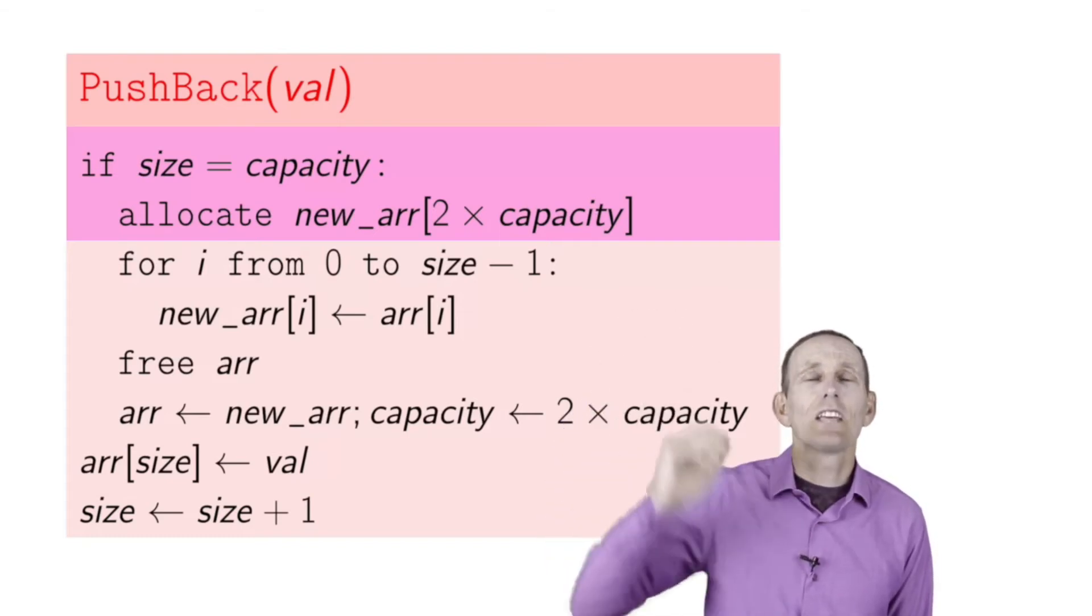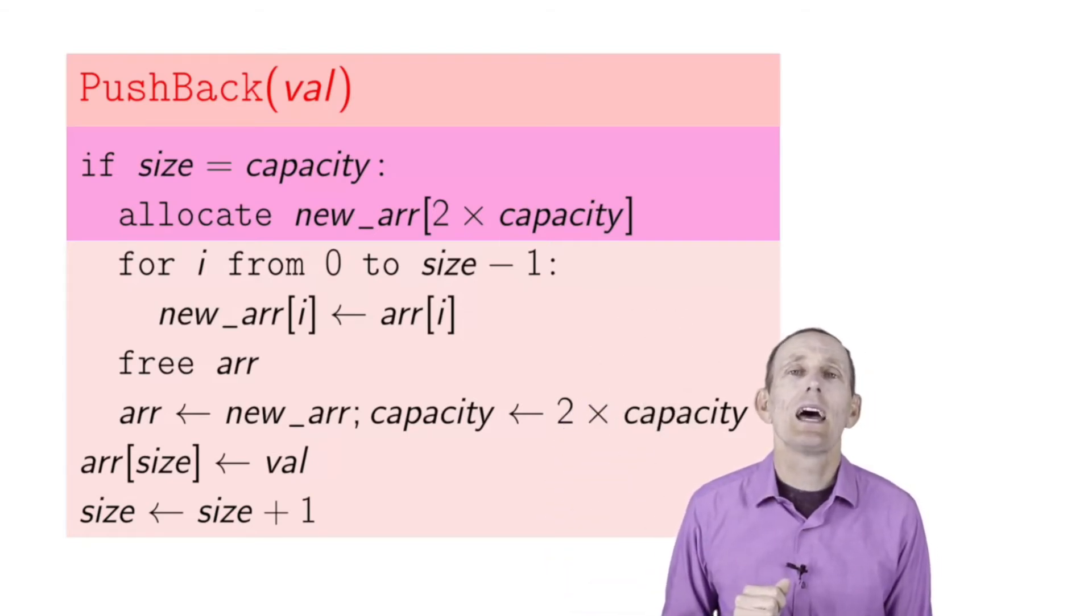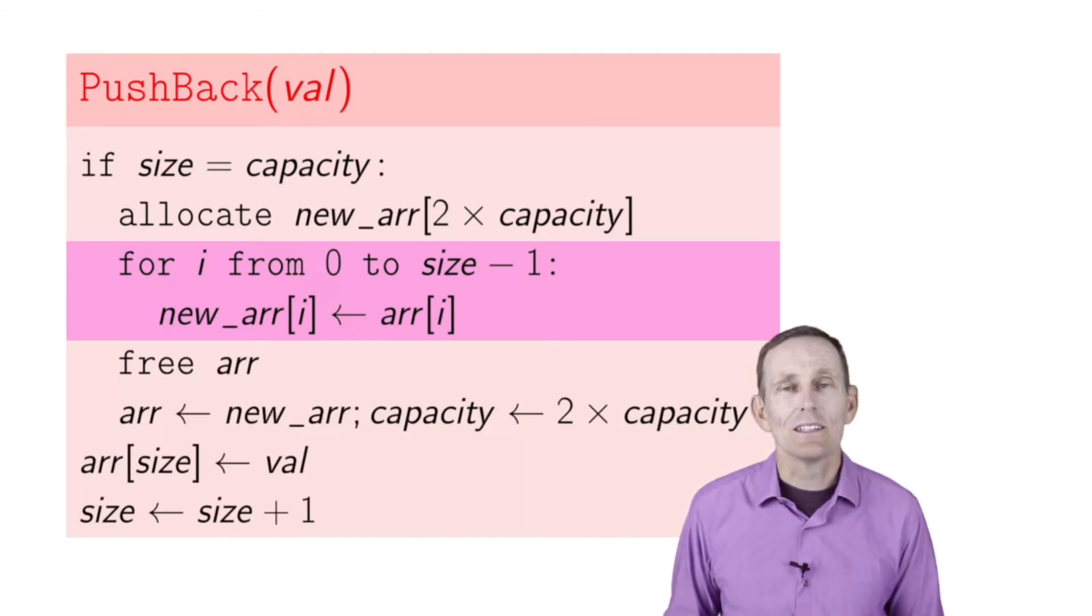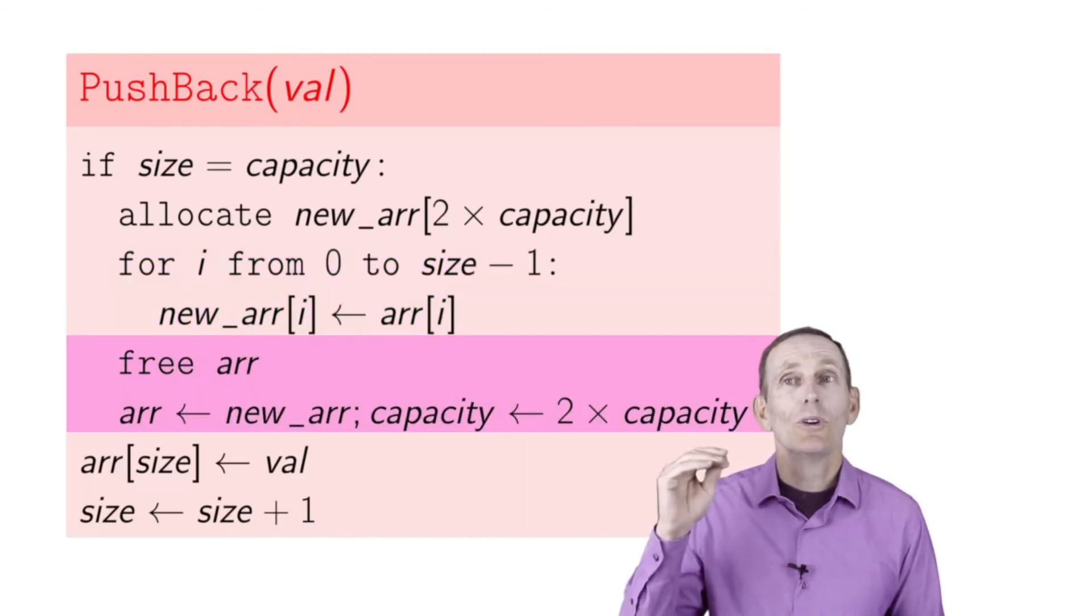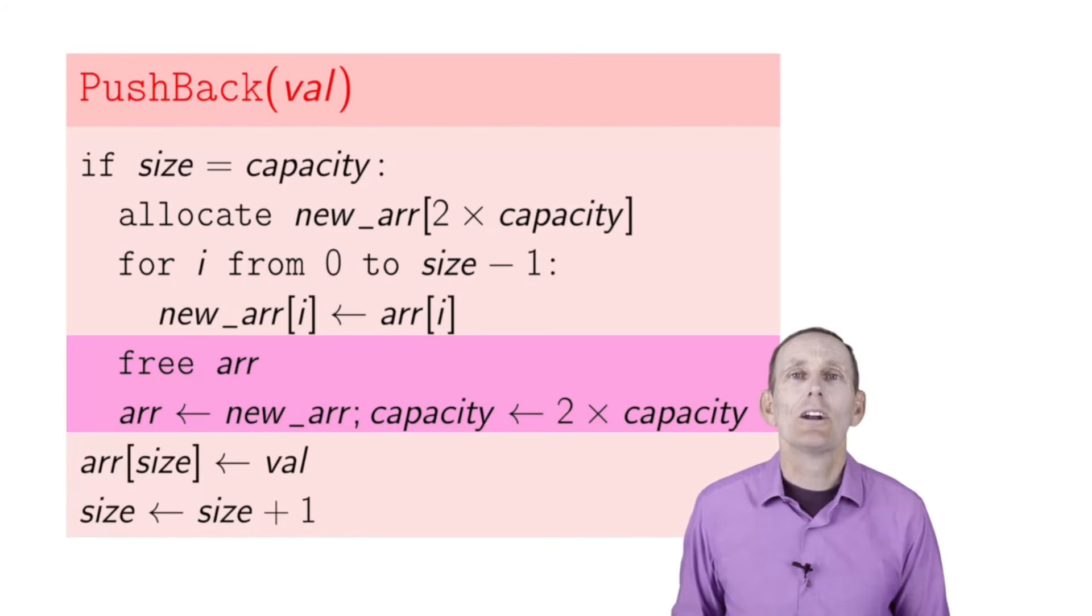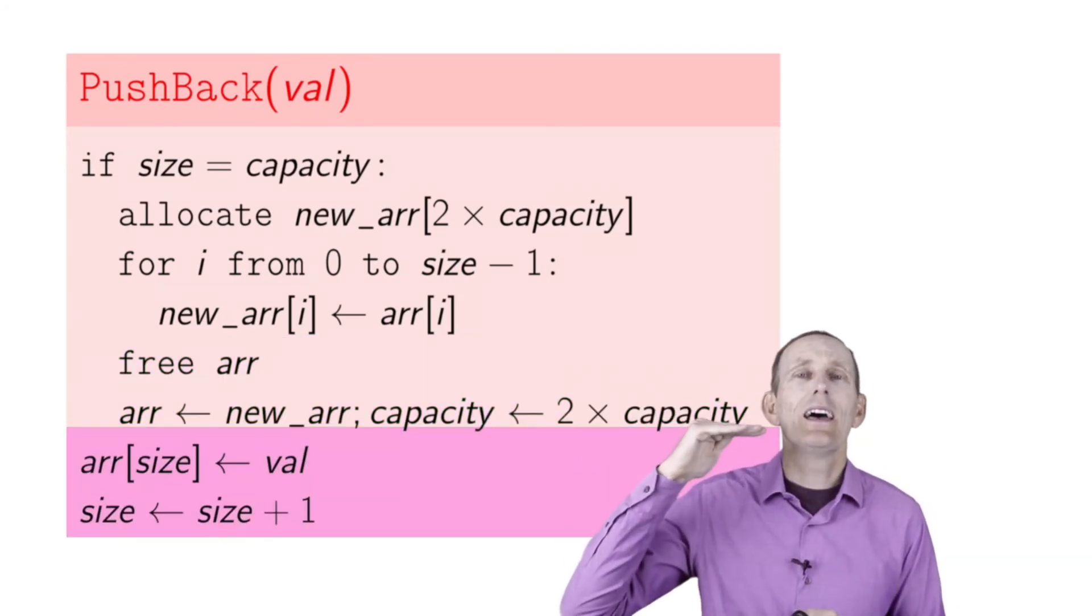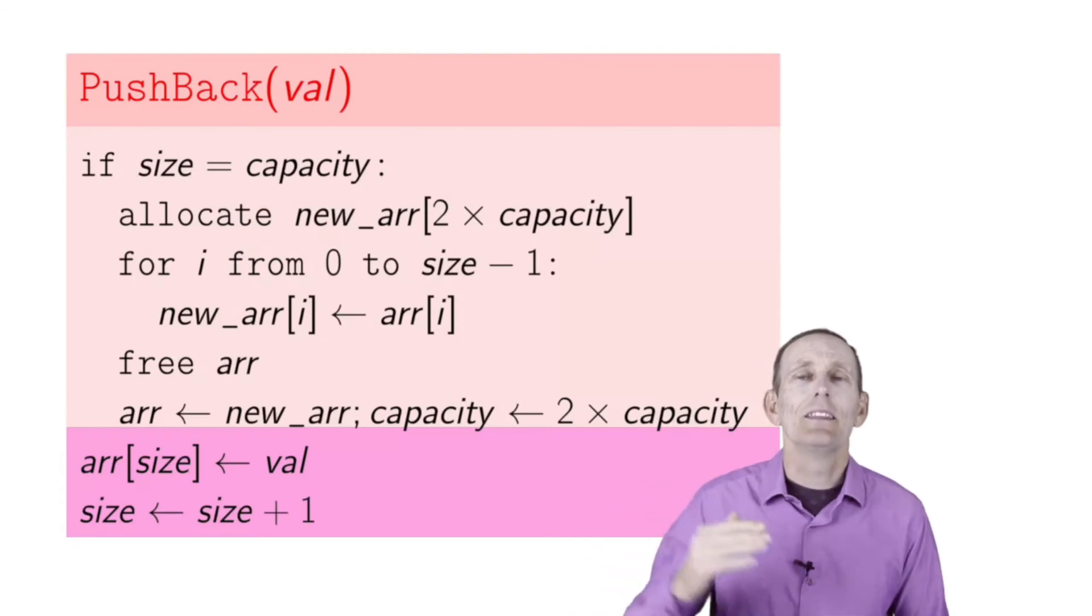If we're full, we're not going to do that yet. If size equals capacity, then we allocate a new array - we're going to make it twice the capacity. Then we go through a for loop copying over every one of the elements from the existing array to the new array. We free up the old array and set array to the new array. At that point, we've got space, and we go ahead and set the size element and increment size.